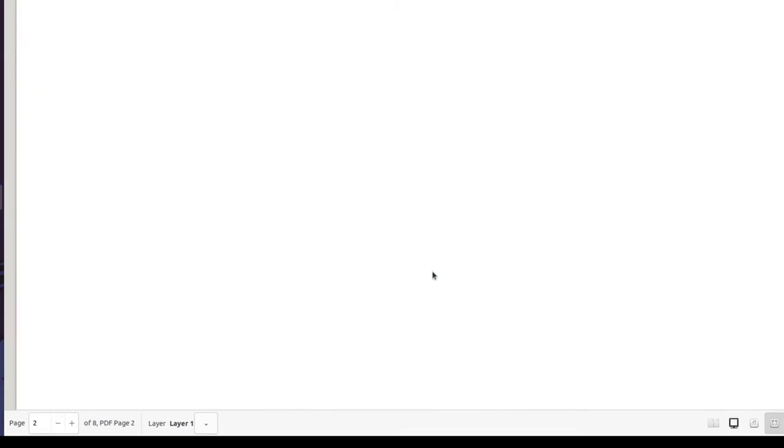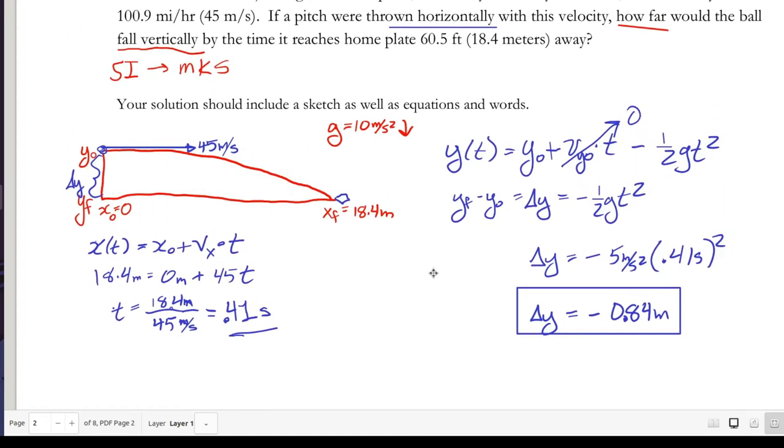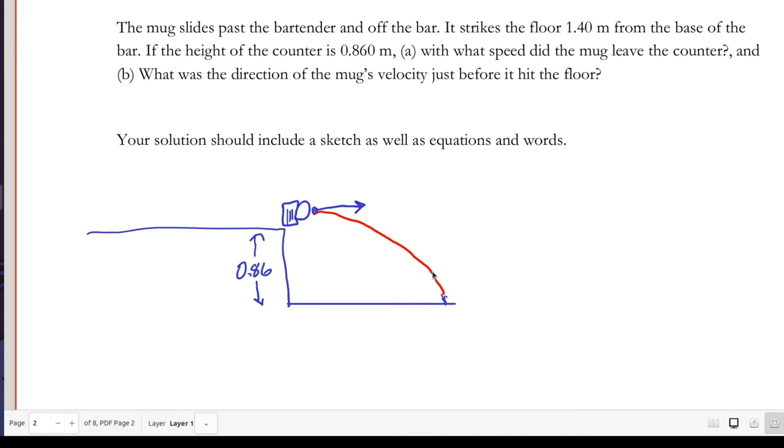Comparing that to the previous question, we saw here that we were given the initial speed and asked how far it fell. We were also given how far the pitch traveled. Here we're told how far the mug travels horizontally as the crow flies, as the mug flies, and we want to know with what initial speed it left the counter.